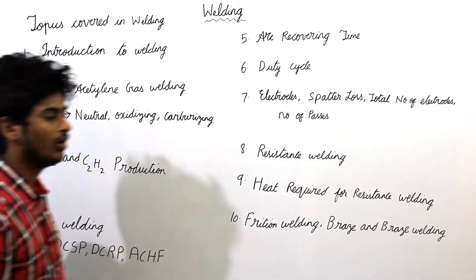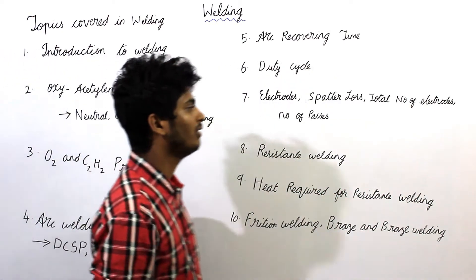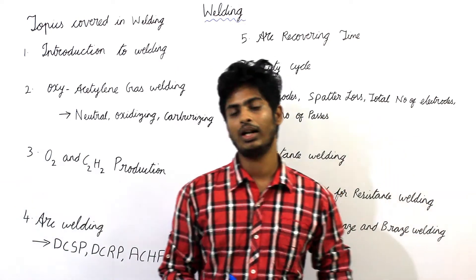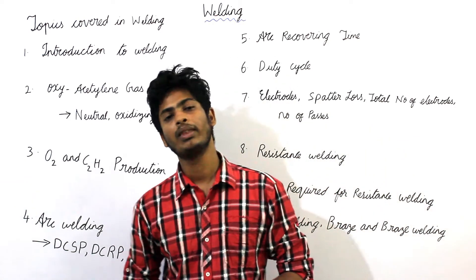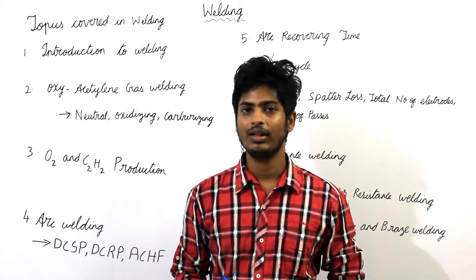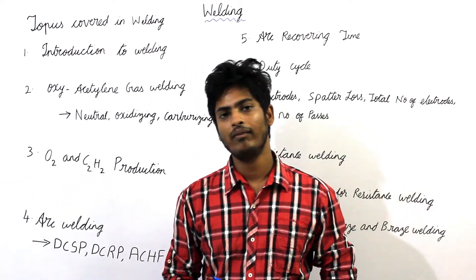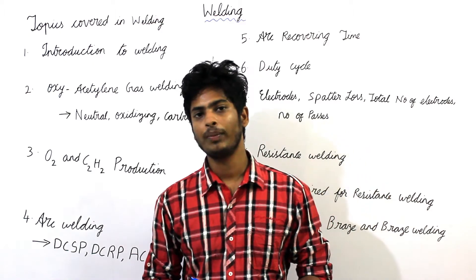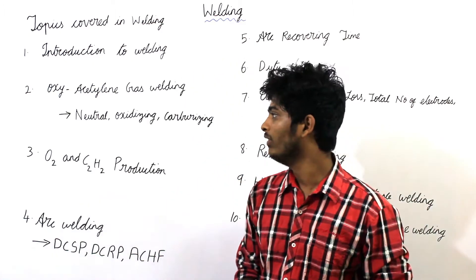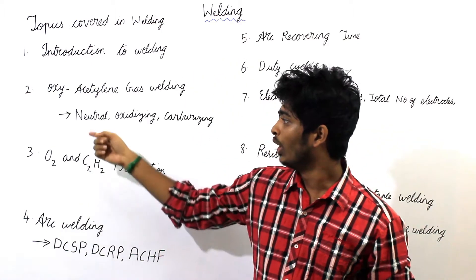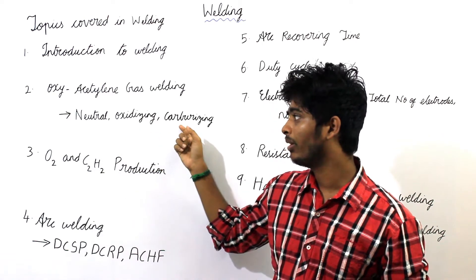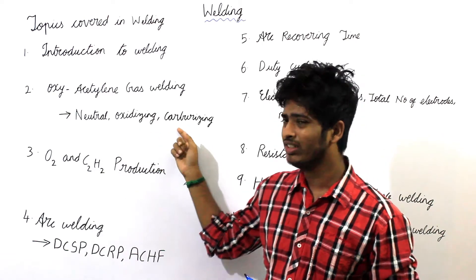The second topic is oxygen-acetylene gas welding process. Under this we will see the different ratios of oxygen and acetylene which are used for welding process, and we will see neutral flame, oxidizing flame, and carburizing flame.